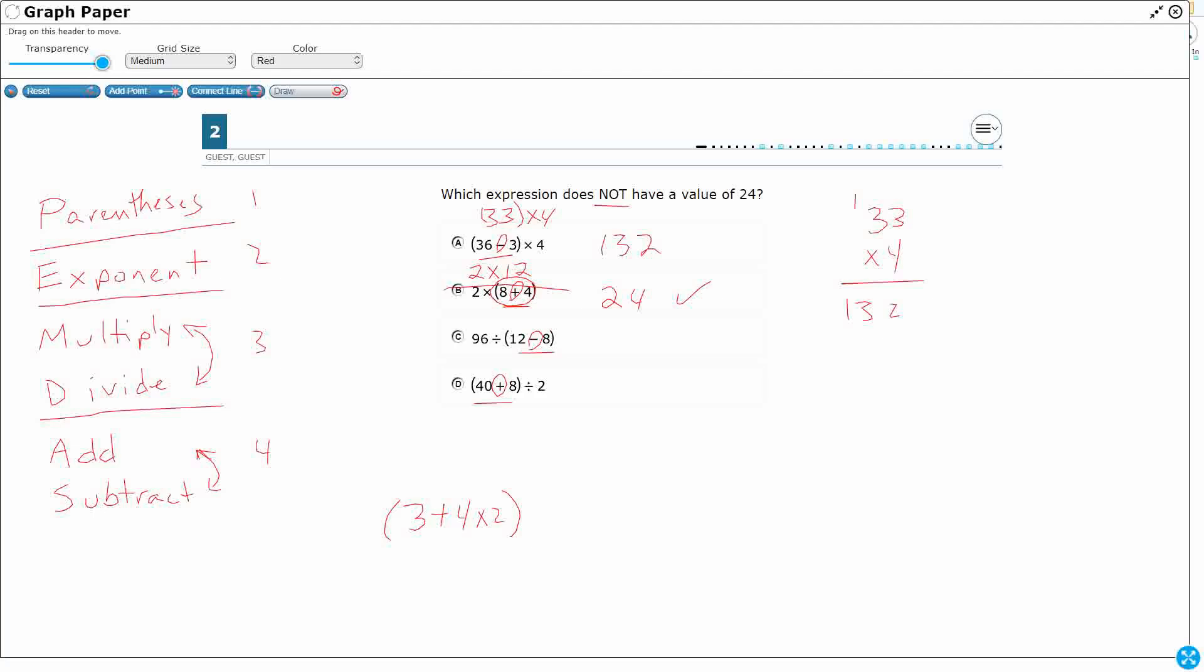OK. And then let's see. I've got my parentheses first. 12 minus 8. It's going to be 4. All right. So 96 divided by 4.